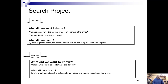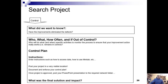In the analyze phase, we're starting to narrow down the variables that have the biggest impact on improving the CTQs — what are the biggest defect drivers and what did we learn? In the improve phase, we need to eliminate the defects, and by following these steps we should be able to improve the process. In the control phase, we ask whether the improvements have eliminated the defects — who will do what and when, for the specific activities to monitor the process to ensure that your improvement action really works and remains in control. Sustainability.